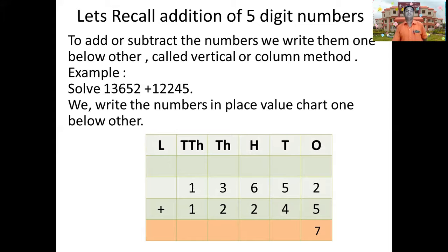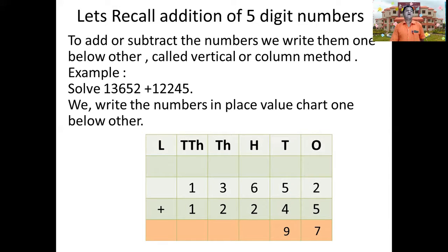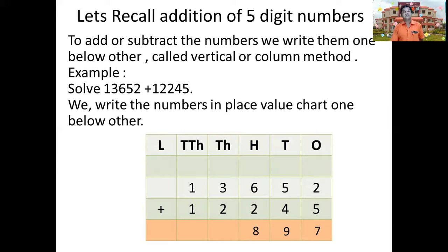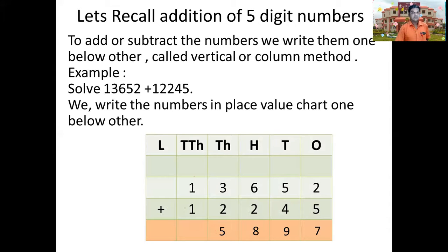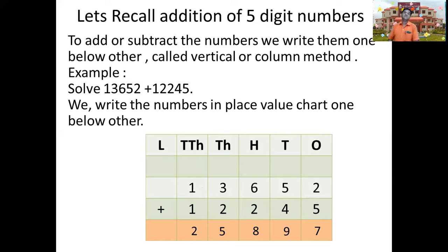Then we add the digits at the tens place — those are 5 and 4, giving us 9. Then we add digits at the hundreds place, then the thousands place, then the ten-thousands place. 3 and 2 gives us 5. So the addition of 13,652 with 12,245 is 25,897.